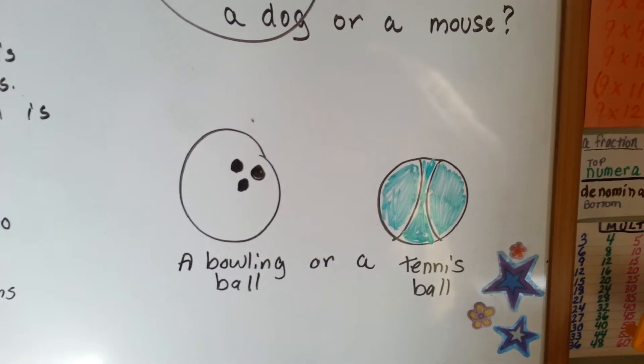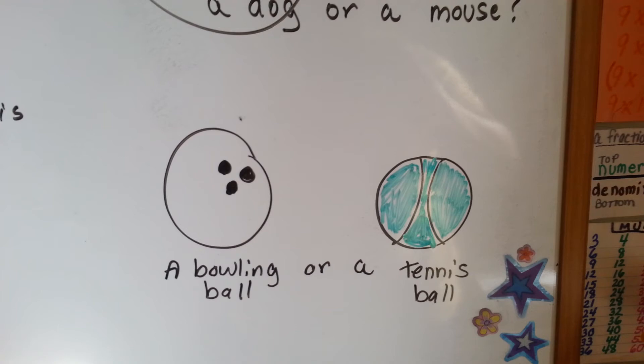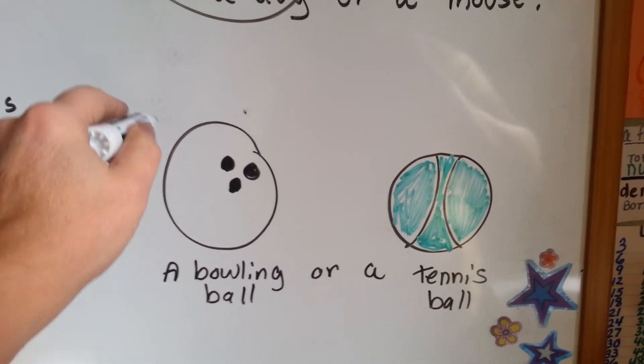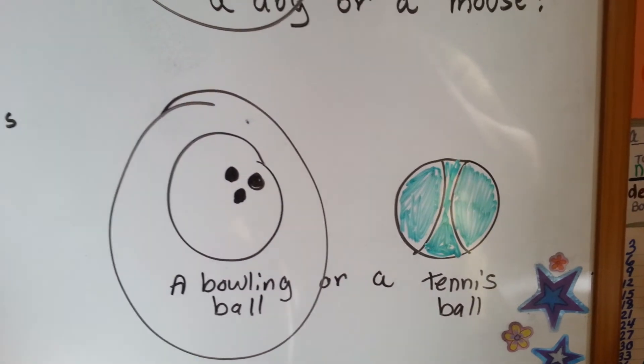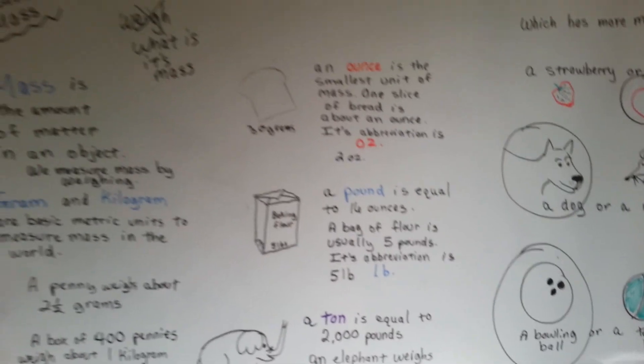Which has more mass, a bowling ball or a tennis ball? Well, I can pick up and throw a tennis ball, but I can't throw a bowling ball. So, I would say the bowling ball has more mass.